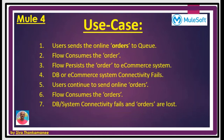In this typical use case, the user sends online orders to the queue. The user browses orders, creates a shopping cart, and purchases an order containing two or three items. That order sits into the queue and our flow consumes it, then persists the order into the e-commerce system or underlying database. But the database or e-commerce system connectivity fails. The user doesn't know this and continues ordering, so the flow keeps consuming orders continuously. The reconnection strategy tries but still the connectivity fails and orders are lost.